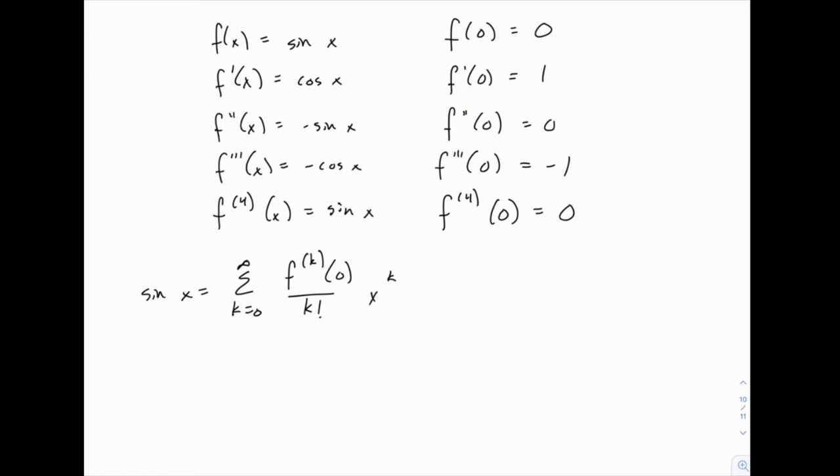So when k equals 0, we get the first value for our coefficient, which is 0, divided by 0 factorial times x to the 0, which of course is just 1. So that whole term goes to 0, but we'll keep it for now. When k equals 1, we'll have the first derivative at 0, which is 1, divided by 1 factorial times x to the 1.